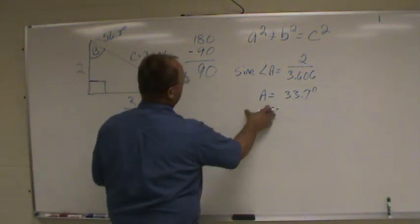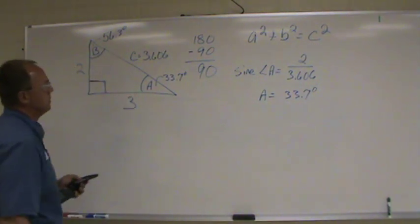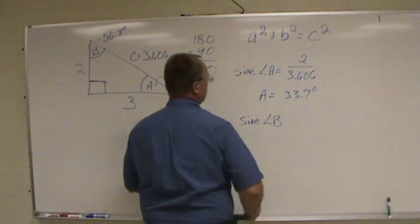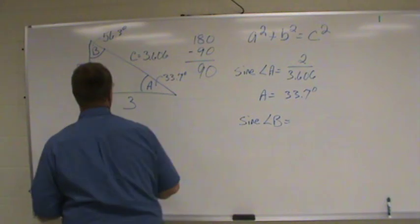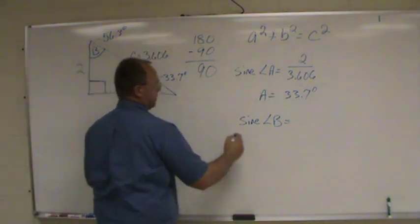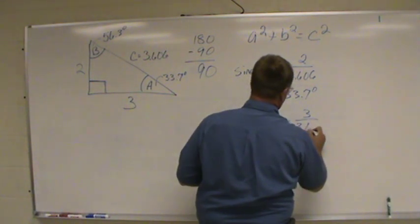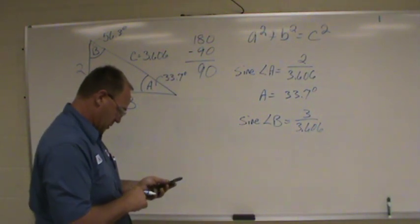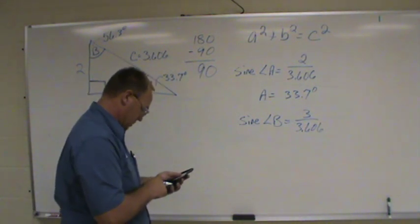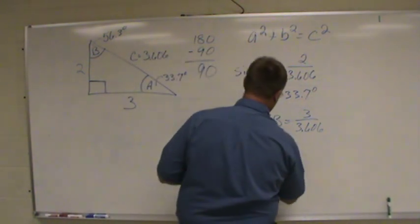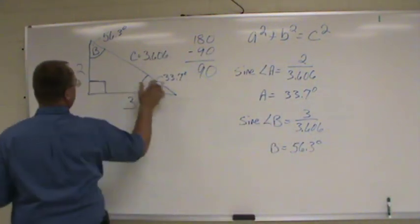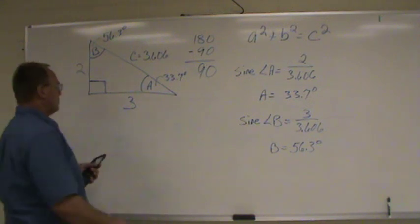But let's say we want to use the formula to find angle B directly. We use the same formula: sine of angle B equals side opposite divided by hypotenuse. You come up with B equal to 56.3 degrees — just like before.